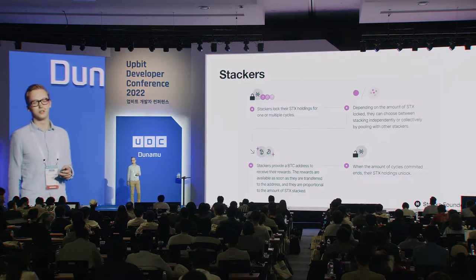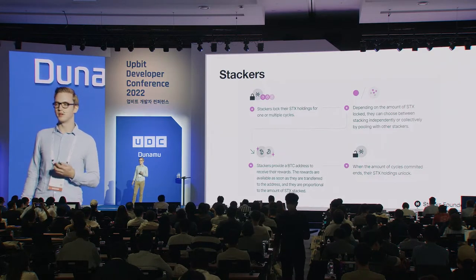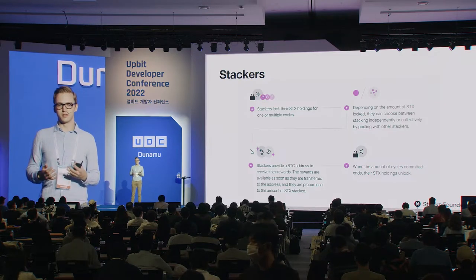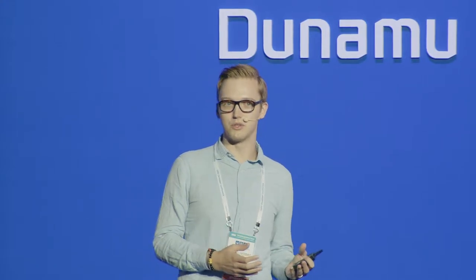On the stacker side, users who hold STX tokens can lock them in for one or multiple cycles. Depending on the amount locked, they can stack individually or in a stacking pool. Stackers submit a Bitcoin address toward a reward slot. By locking tokens to signal the longest chain tip they have most confidence in, they receive a yield in Bitcoin. The Bitcoin that miners send into the network goes to the stackers as recipients. So if you have STX, you can receive a native Bitcoin yield directly in your Bitcoin wallet — not a wrapped asset, but true Bitcoin.